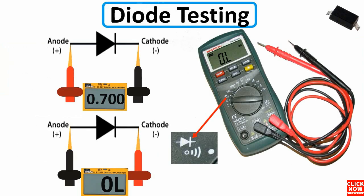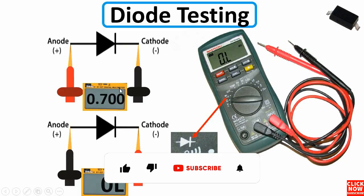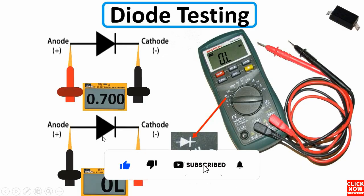Now I'm going to show you how to test a diode. As you know, a diode has two terminals — the anode and the cathode. It is a polarized component, unlike a resistor, with a positive and a negative terminal. To test a diode, set your multimeter to the diode option, then place the red probe on the anode and the black probe on the cathode.